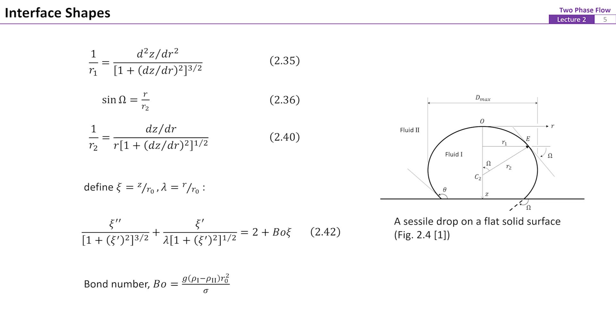From geometric considerations, the principal radius of curvature R1 in the vertical plane is given by equation 35. And the other radius on the orthogonal plane R2 is given by equation 40. Substituting these two relations into Young-Laplace equation and defining C and lambda, a differential equation of R as a function of Z C can be obtained.